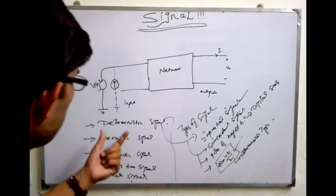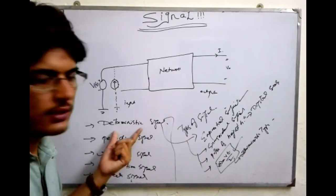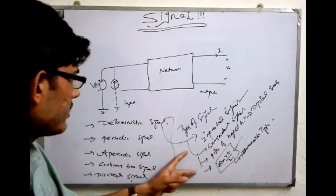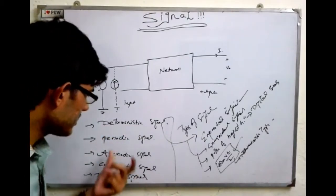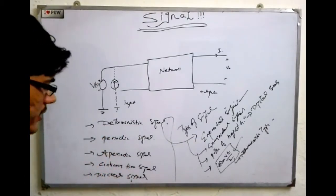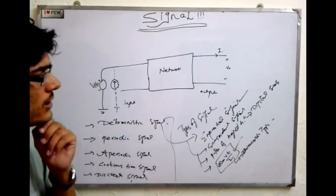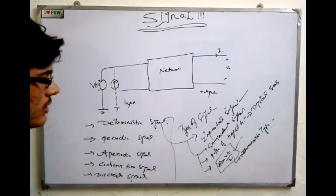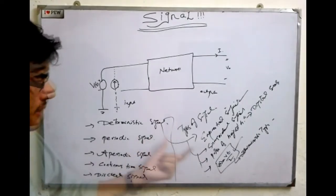I have defined the deterministic signal and listed its types. I will also discuss the periodic signal, aperiodic signal, and continuous time signal. But first let's come to the types of deterministic signal.